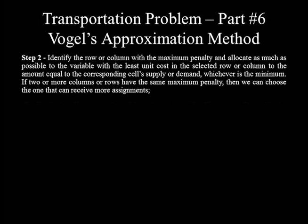Step 2: Identify the row or column with the maximum penalty and allocate as much as possible to the variable with the least unit cost in the selected row or column, to the amount equal to the corresponding supply or demand, whichever is the minimum. If two or more rows or columns have the same maximum penalty, choose the one that can receive more assignments. This step and those ahead are almost similar to the steps in the least cost cell method.